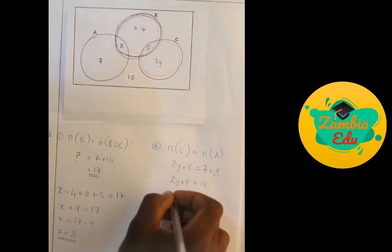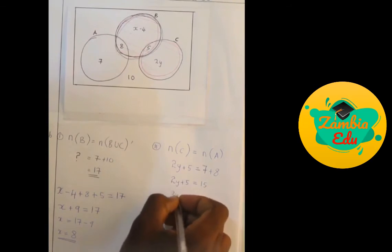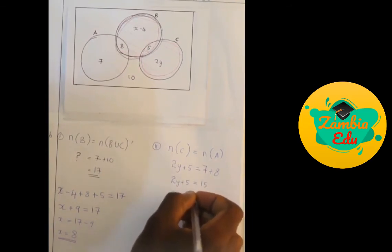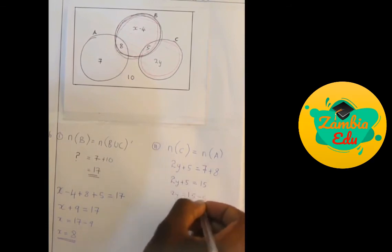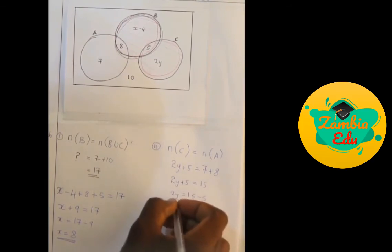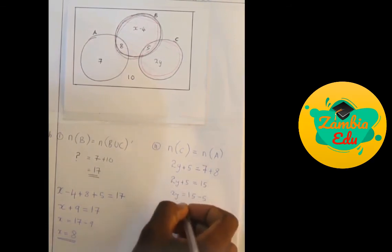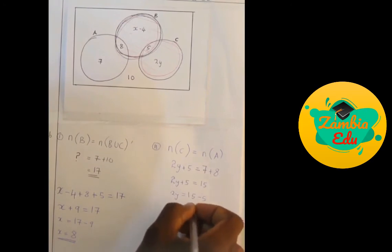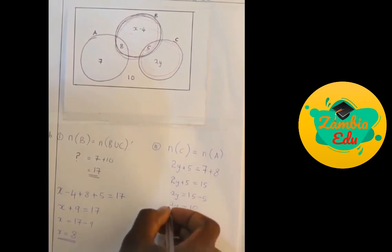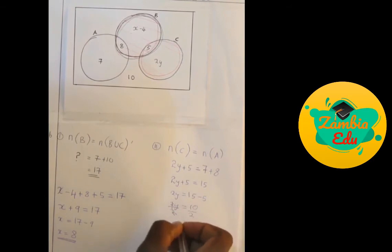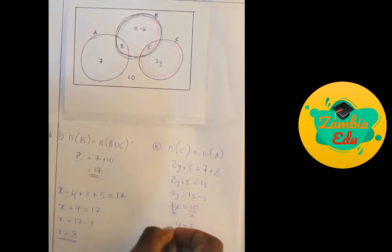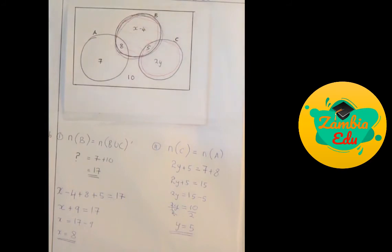Grouping like terms: 2y equals 15 minus 5, so 2y equals 10. Dividing both sides by 2, y equals 5.